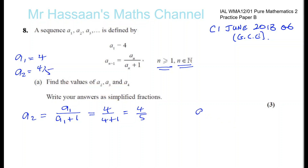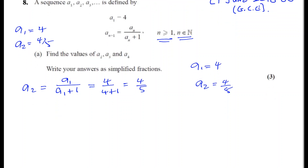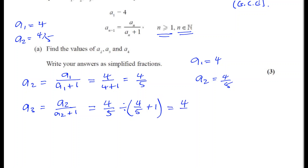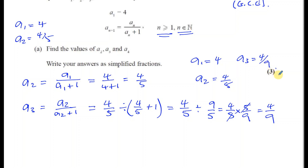So a₂ = 4/5. Now to find a₃, I take the term before it, a₂, and divide by a₂ + 1. So I have 4/5 divided by (4/5 + 1). Now 4/5 + 1 is 5/5 + 4/5 = 9/5. So it's 4/5 divided by 9/5, which is 4/5 times 5/9. The 5s cancel out, leaving 4/9. So a₃ = 4/9.